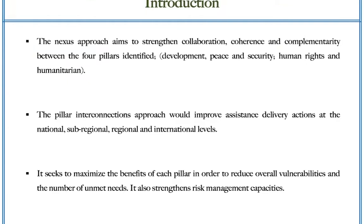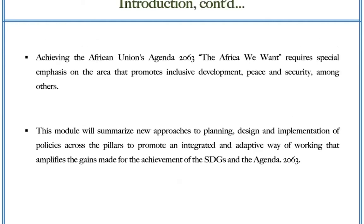It is also strengthening risk management capacity and achieving the African Union's Agenda 2063. The African we want requires special emphasis on areas that promote and consolidate development, peace, and security among others. This module will summarize new approaches to planning, design, and implementation of policies across the pillars to promote an integrated and adaptive ways of working that amplifies the gains made for the achievement of the SDGs and Agenda 2063.